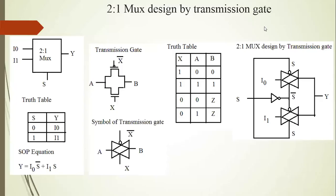In VLSI design and technology, explain number 6: a 2-to-1 MUX designed by transmission gates. A transmission gate is designed by two transistors: a P-channel and an N-channel MOSFET.